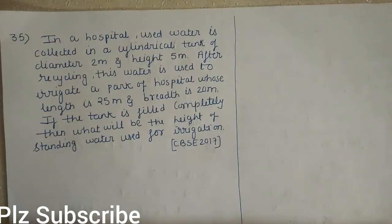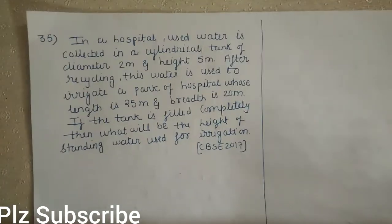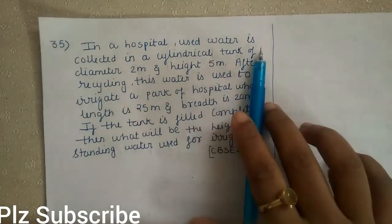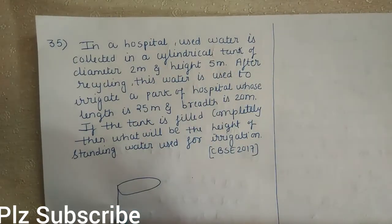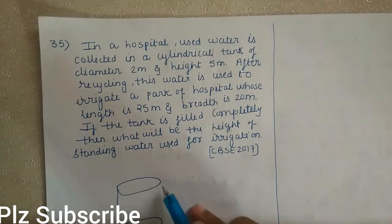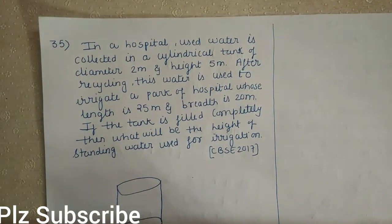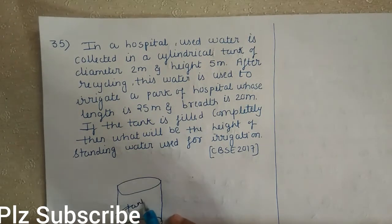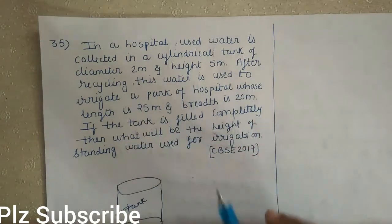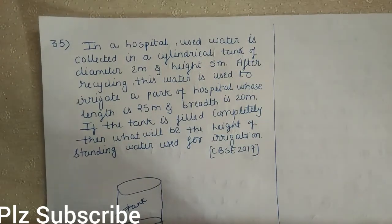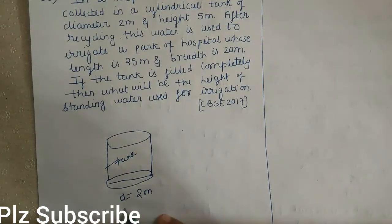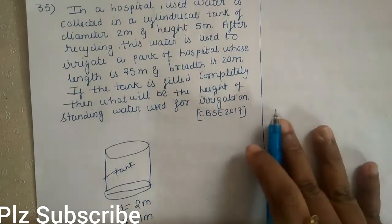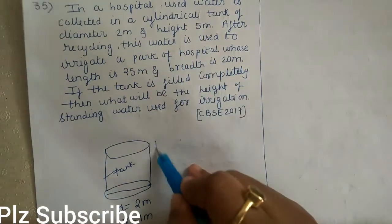Question number 35: In a hospital, used water is collected in a cylindrical tank. The diameter of this tank is 2 meter, so the radius is 1 meter, and the height of the tank is 5 meter.